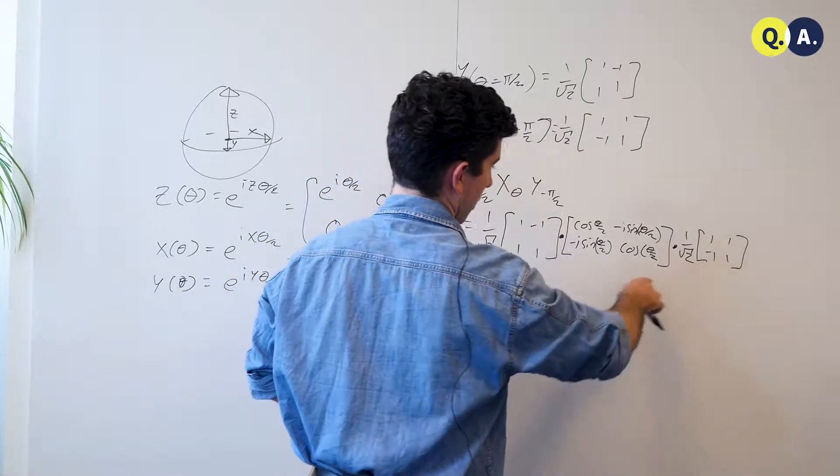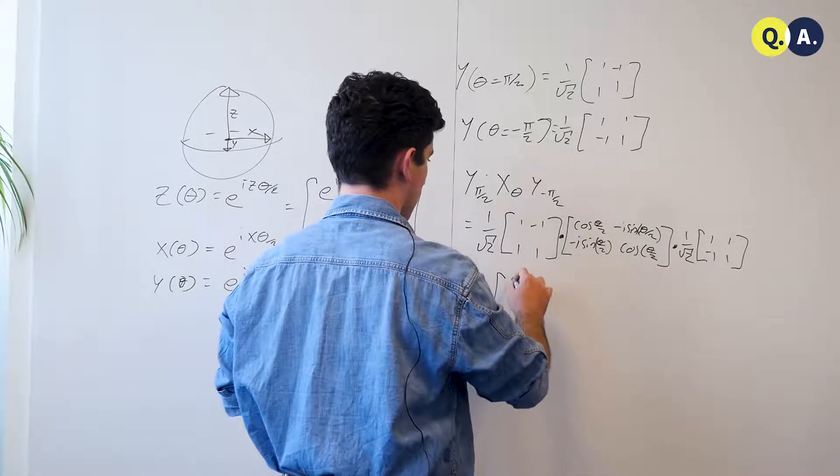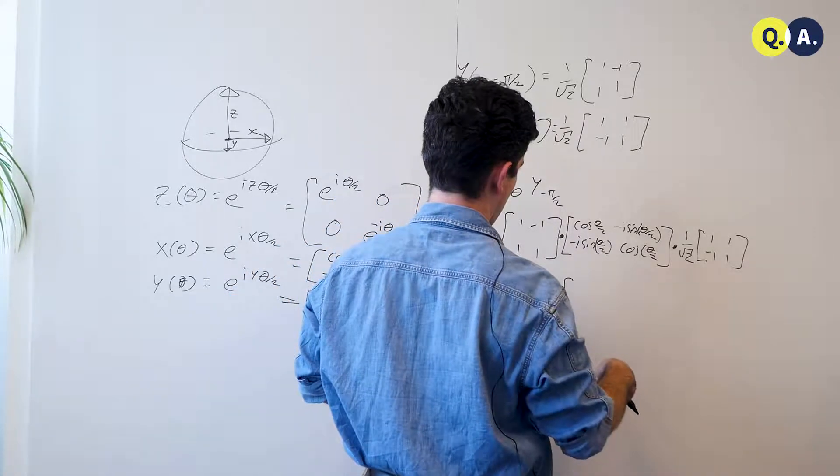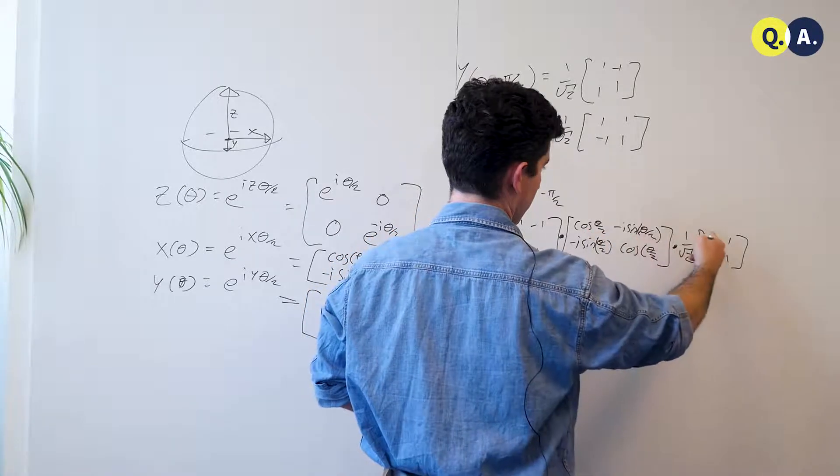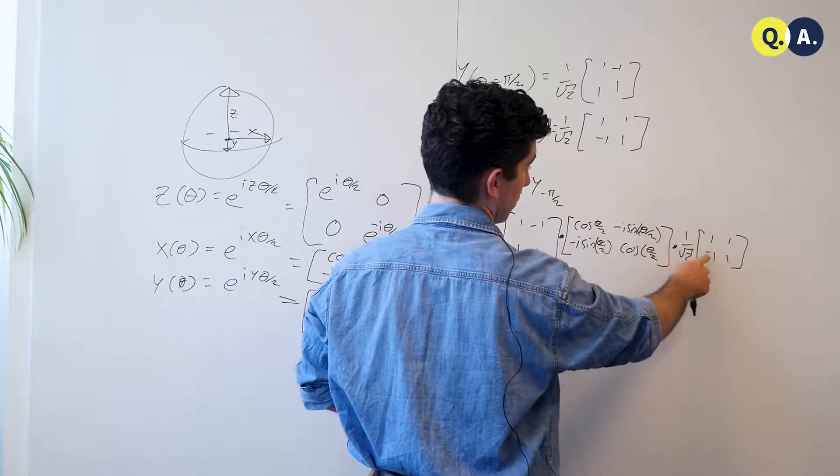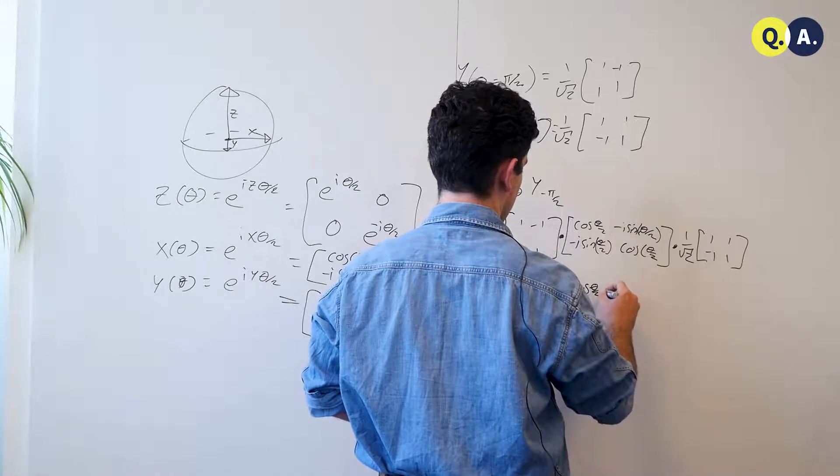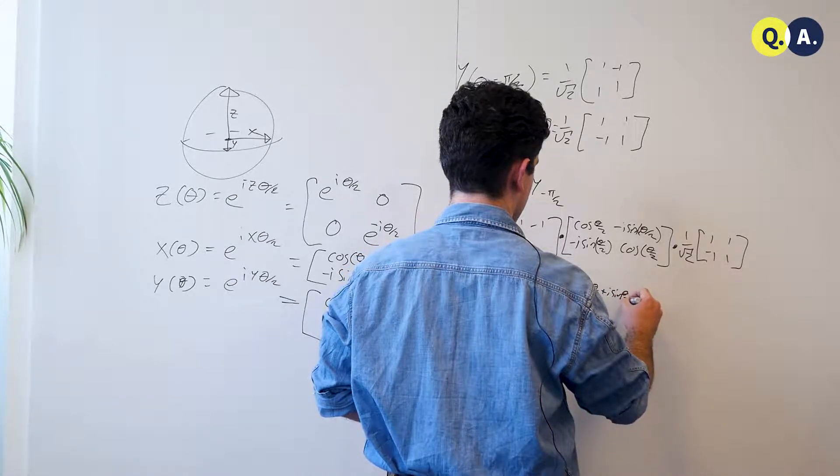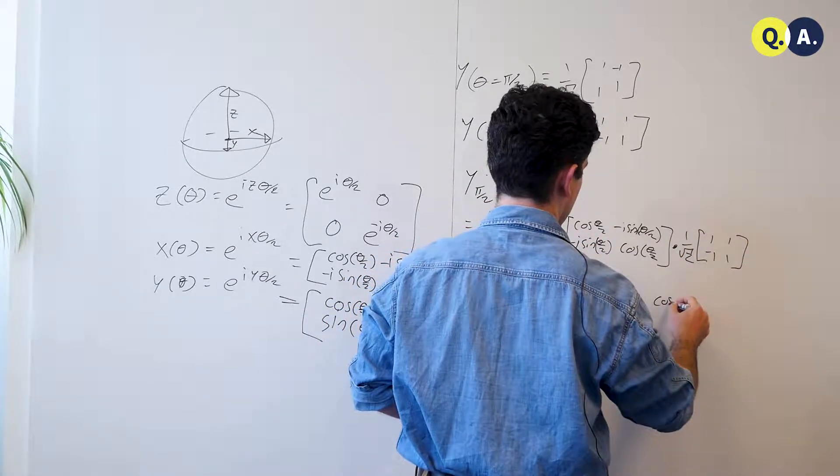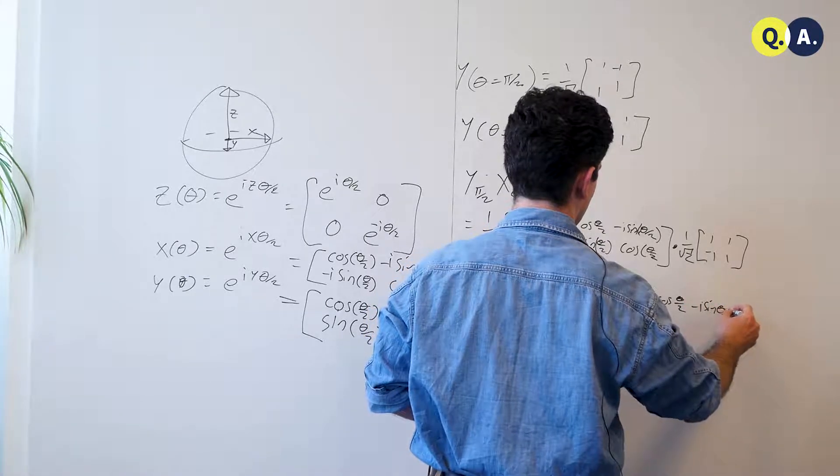So, first off, I can take these two factors of 1 over square root of 2, make them a factor of a half, 1, minus 1, 1, 1. And then if I multiply these, I get cos theta over 2 plus i sine theta over 2, because these two minus signs cancel. This is cos theta over 2 plus i sine theta over 2. Here, I'll get cos theta over 2 minus i sine theta over 2.